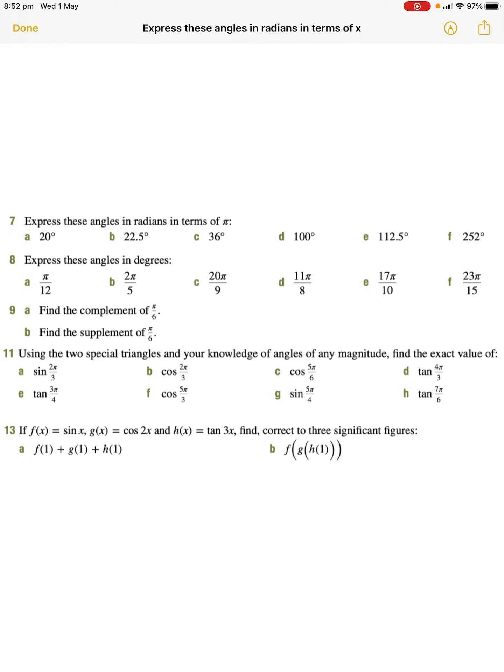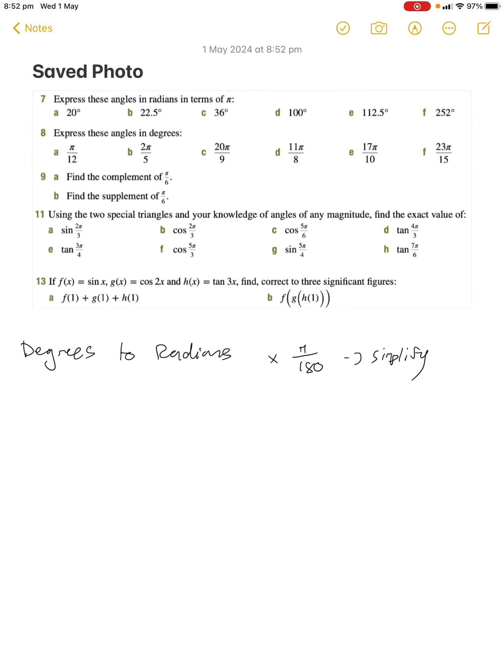Let's do the first one. If we had 20 degrees, we're going to do 20 times π over 180. Now we want to keep this fraction.